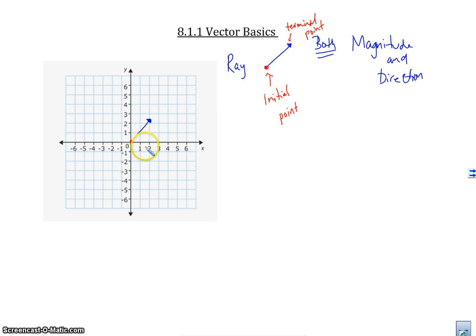If the initial point is on the origin at 0, 0, then this vector is said to be in standard position. So if my vector starts at 0, 0, it's in standard position.